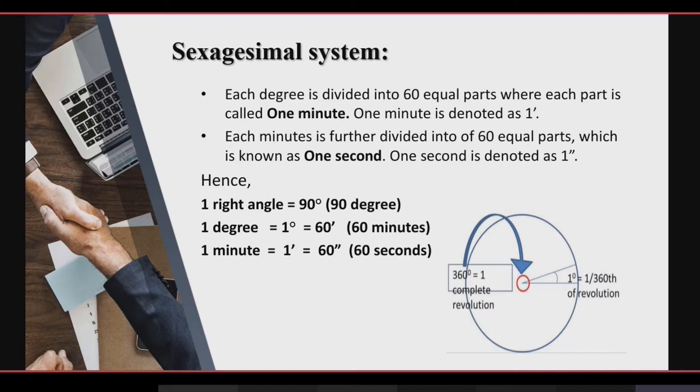So we can say that one right angle is equal to 90 degrees, one degree is equal to 60 minutes, and one minute is equal to 60 seconds.